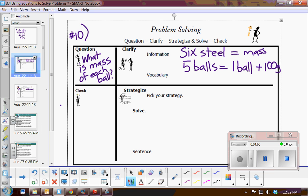First, before I write an equation, I must define the variable. I'm going to let x represent the mass of one ball. Now that I've defined the variable, I'm going to write an equation. I have 5 balls, so 5x equals 1 ball plus 100.